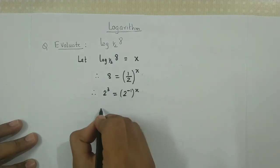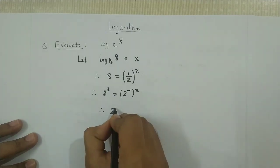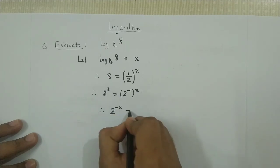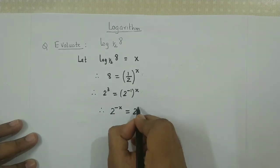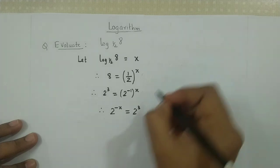Since the bases are equal, we can equate the exponents: -x equals 3.